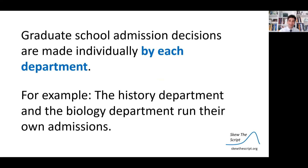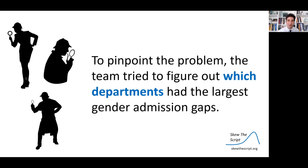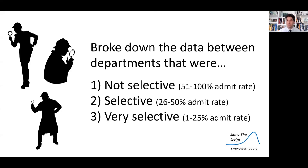Graduate school admissions are made individually by each department — the requirements for physics differ from English, which differ from history. To pinpoint where the association between gender and admissions rates is coming from, investigators wanted to see which departments had the largest gender admission gaps. They broke the data into departments that were not selective (admitting over 50% of students), selective (admitting 26–50%), and very selective (admitting only 1–25% of applicants).